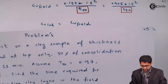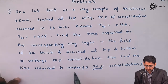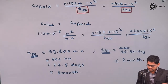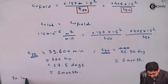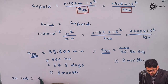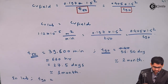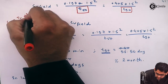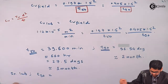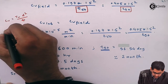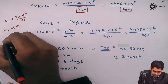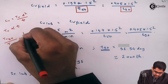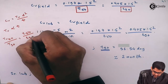The problem asked about the time required to undergo 70% consolidation in the field. But if the question were asked for the lab, the approach is the same. Since the basic formula C-V = T-V × D² / T shows that T-V is directly proportional to time, we can write: T-V for 50% consolidation divided by T-V for 70% consolidation equals time for 50% consolidation divided by time for 70% consolidation.